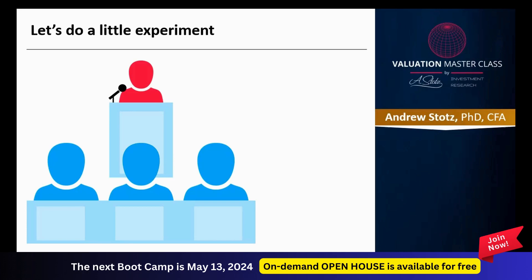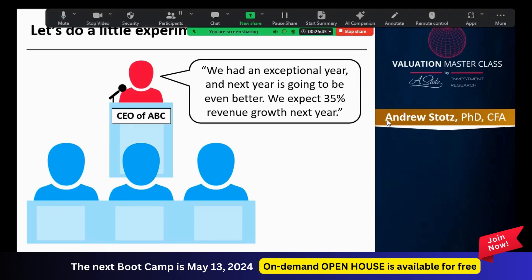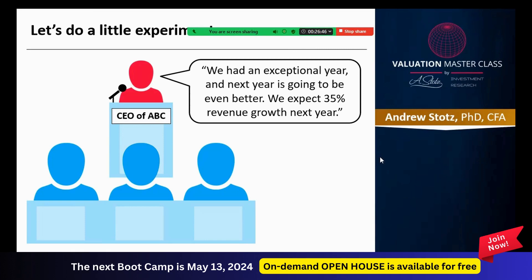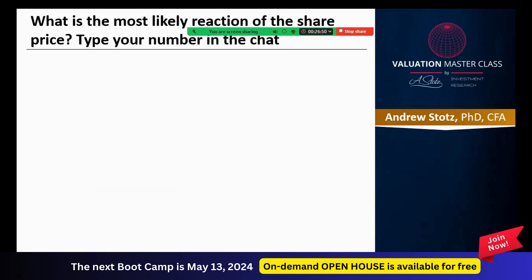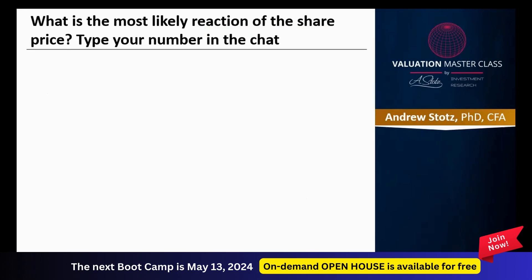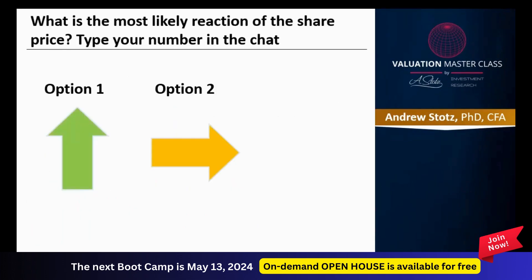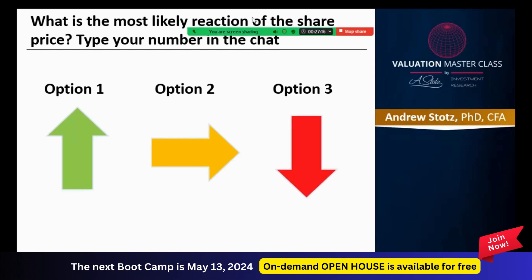Let's do a little experiment. Get on your comment box and get ready to make a comment — everybody should participate. You can see a CEO giving a presentation to people in the audience. The CEO said: 'We had an exceptional year and next year is going to be even better — we expect 35% revenue growth next year.' What would you say after that? Is the share price going to go up, flat, or down? Put your guess in the chat.